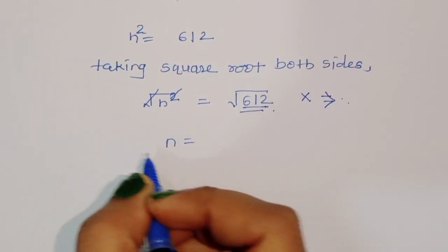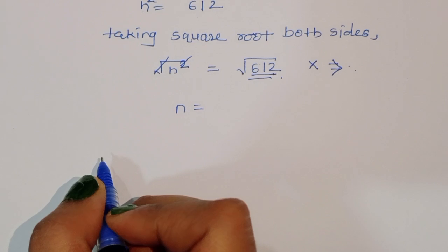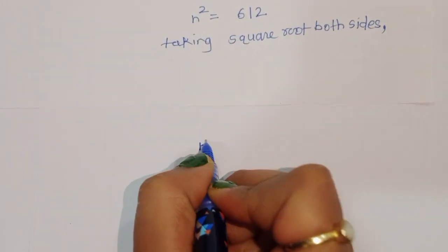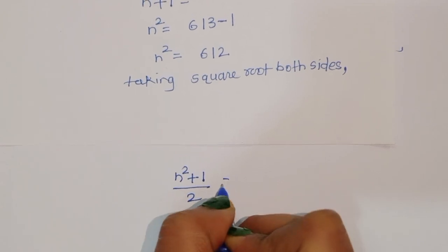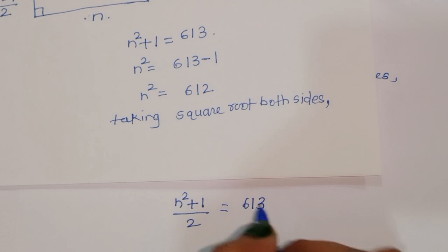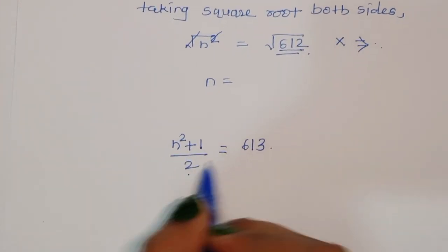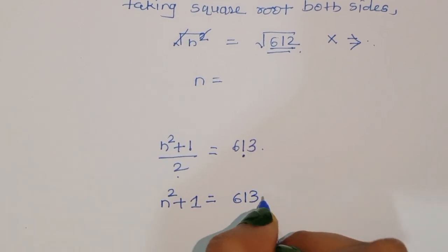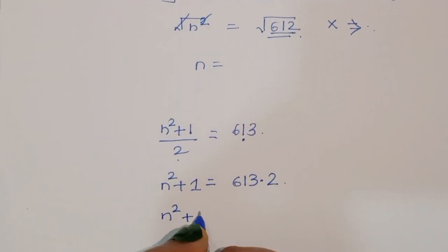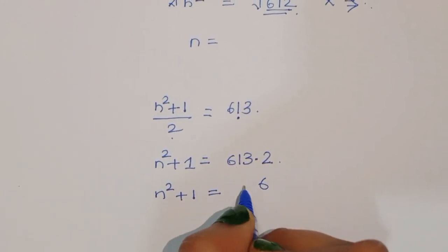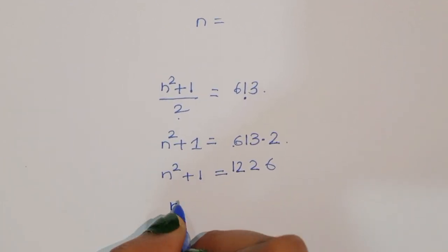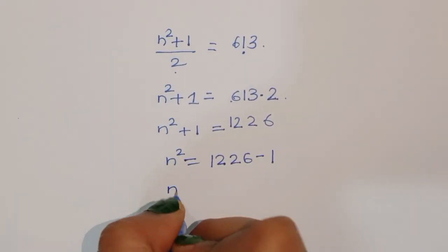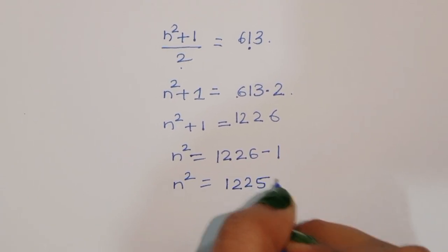Now we compare with the first trial. From the first trial, the hypotenuse is (n squared plus 1) divided by 2. Setting this equal to 613: (n squared plus 1) divided by 2 equals 613. So n squared plus 1 equals 613 times 2, which gives n squared plus 1 equals 1226. Therefore n squared equals 1226 minus 1, so n squared equals 1225.